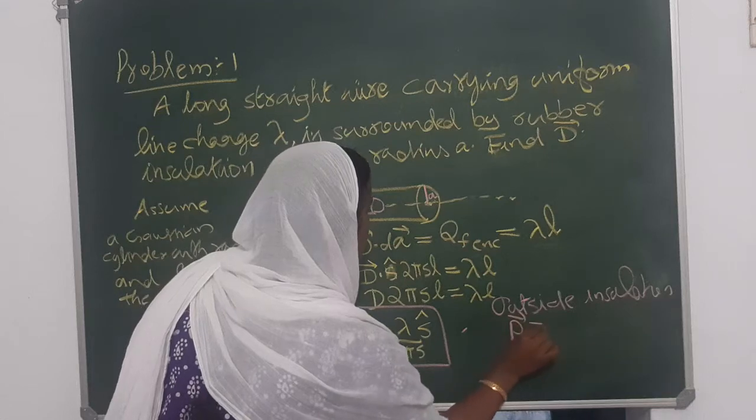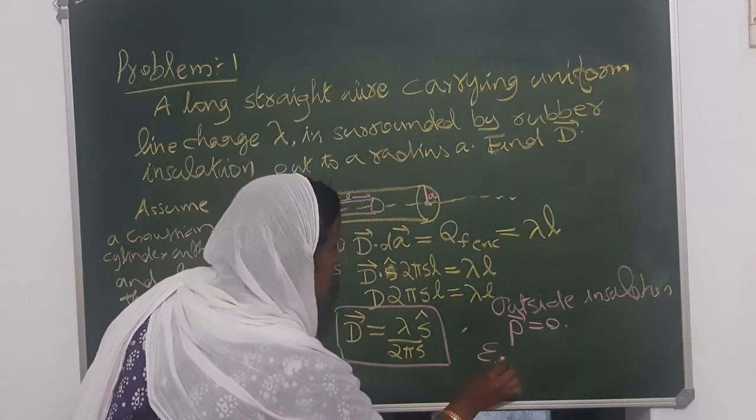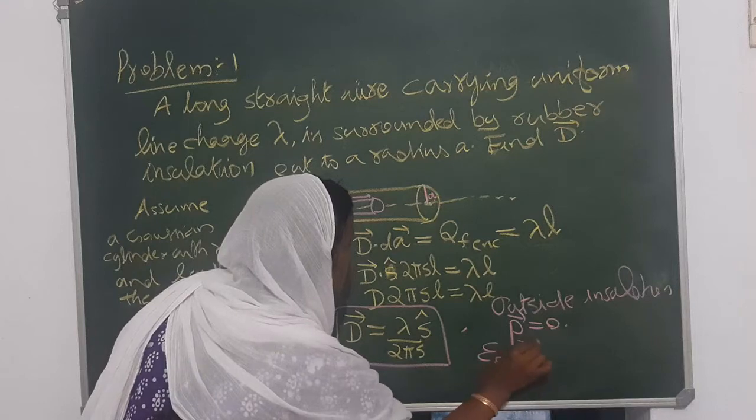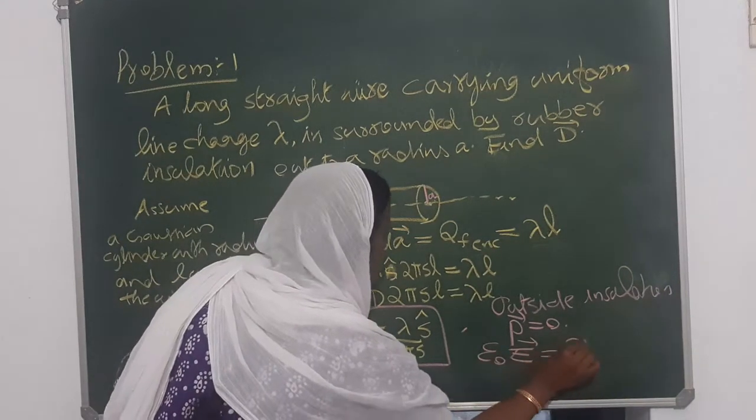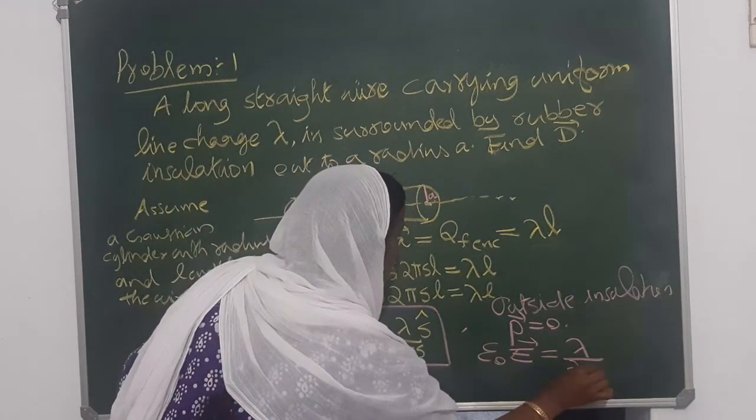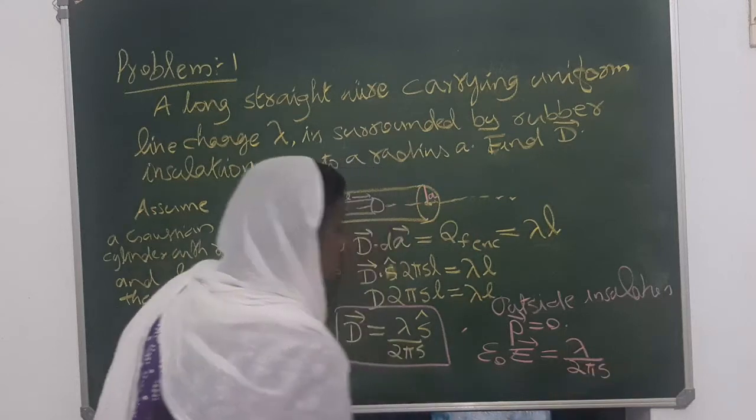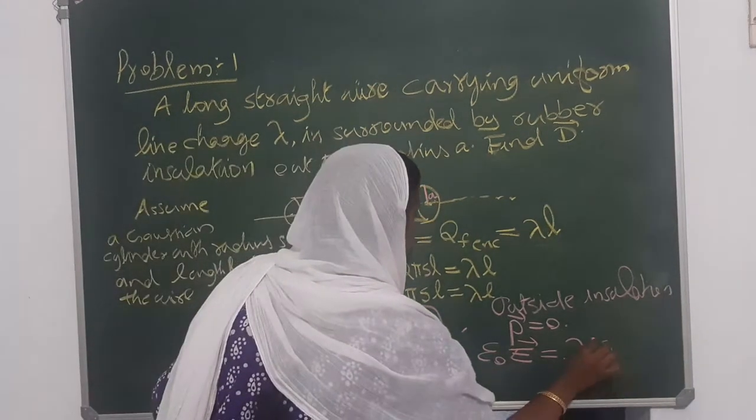Polarization equal to 0. That means epsilon 0 E equal to lambda by 2 pi S.